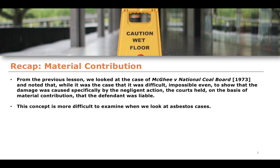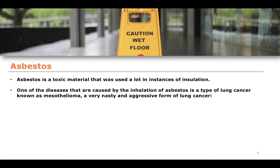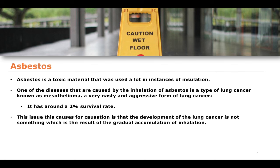Things get more complicated when we think about asbestos cases. Asbestos is a toxic material that used to be used quite a lot in insulation and is definitely no longer used — it is in fact a serious issue if you find asbestos in your house. One of the diseases caused through the inhalation of asbestos is a very rare and very aggressive form of lung cancer called mesothelioma, which has roughly a 2% survival rate. The issue for causation is that the development of this cancer is not the result of a gradual accumulation of asbestos fibers.